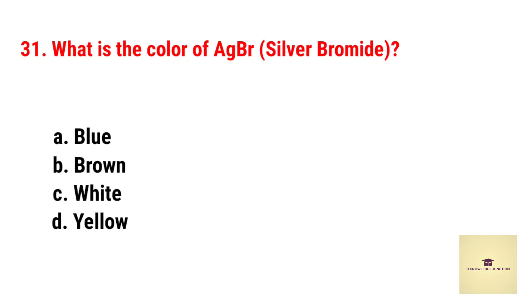What is the color of AgBr? AgBr is the chemical formula of silver bromide. Correct answer is yellow.